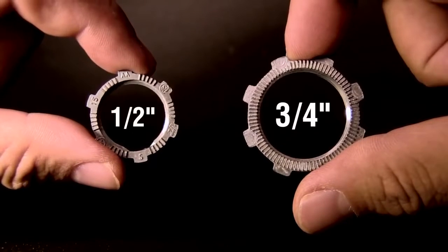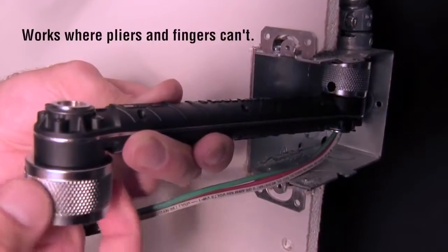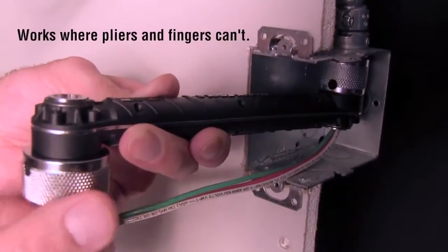Perfect for hard to reach half inch and three quarter inch connectors, this lock nut wrench works in deep or tight boxes where pliers and fingers can't.